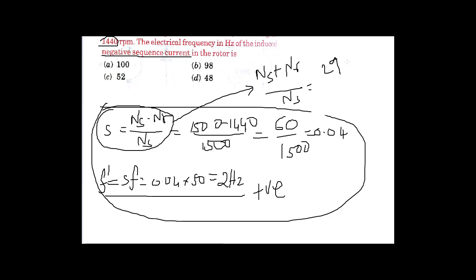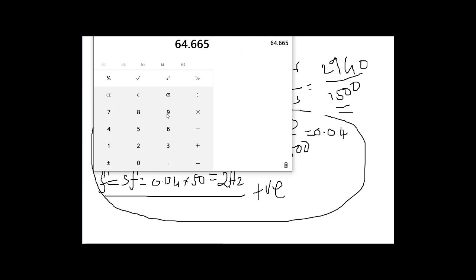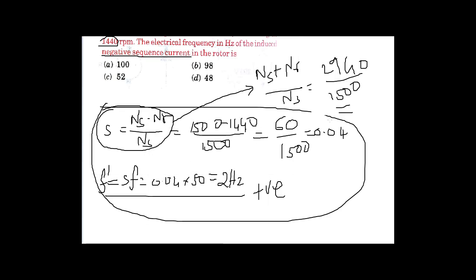Which equals 1500 plus 1440 equals 2940 divided by 1500. Let's do it: 2940 divided by 1500 equals 1.96. 1.96 is the required negative sequence slip.